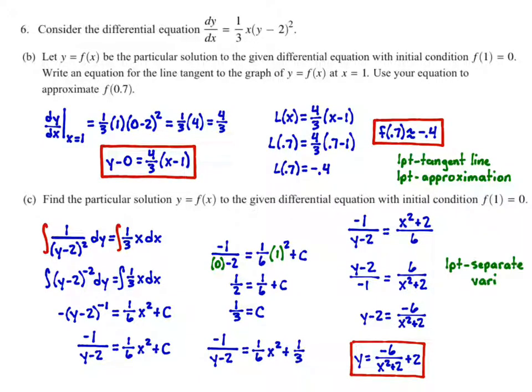You get 1 point for separating the variables correctly. So 1 point for this line. You're going to get 2 points for your antiderivatives. So you're going to get 1 point for the antiderivative on the left. 1 point for the antiderivative on the right. You're going to get 1 point for putting plus C and finding C. So if you didn't put plus C, you don't get that point. And you don't get any other points beyond that point. And you have to have the C value as well. And then you're going to get 1 point for your final answer. So 1 point for isolating y.